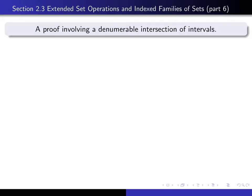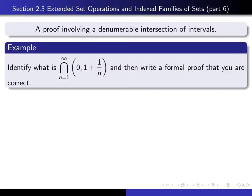This is part 6 in our series of lectures on section 2.3, and in this lecture we're going to consider a proof involving a denumerable intersection of intervals. This is the problem we're going to consider: a denumerable intersection of open intervals, and we want to first figure out intuitively what we think that intersection is. After we come up with that conjecture, we want to write a proof that it is in fact the case.